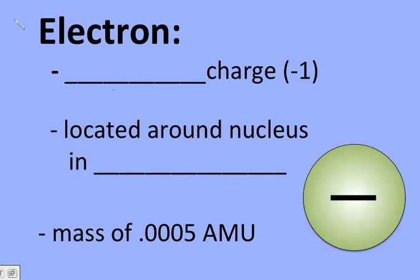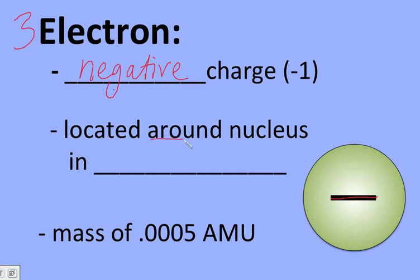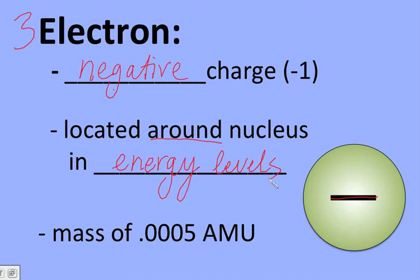Our third atomic particle is the electron. The electron has a negative charge. Unlike the other two particles, we don't find the electron inside the nucleus — we find it going around the nucleus in something called energy levels. The mass of the electron is 0.0005 AMU, which is very, very small compared to the proton and neutron.